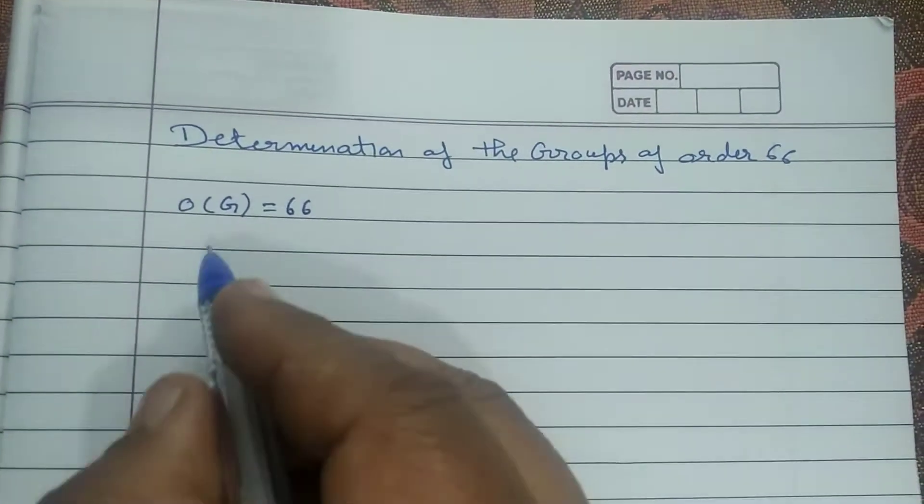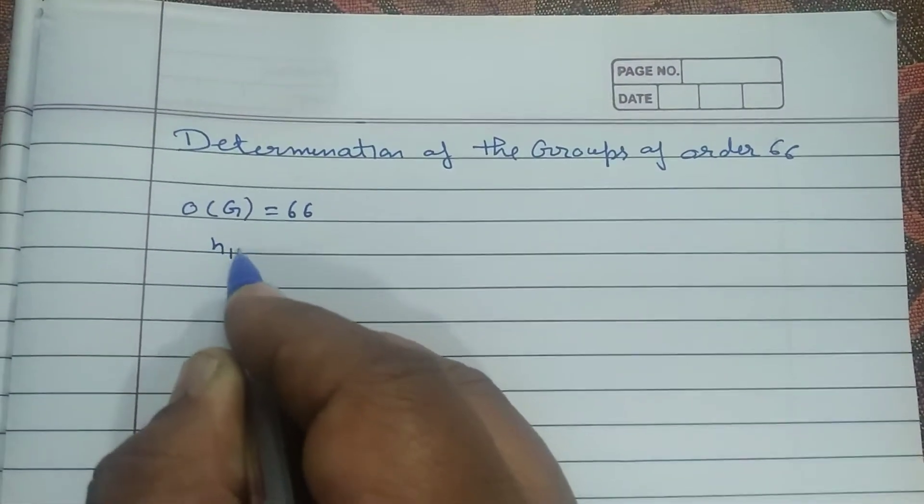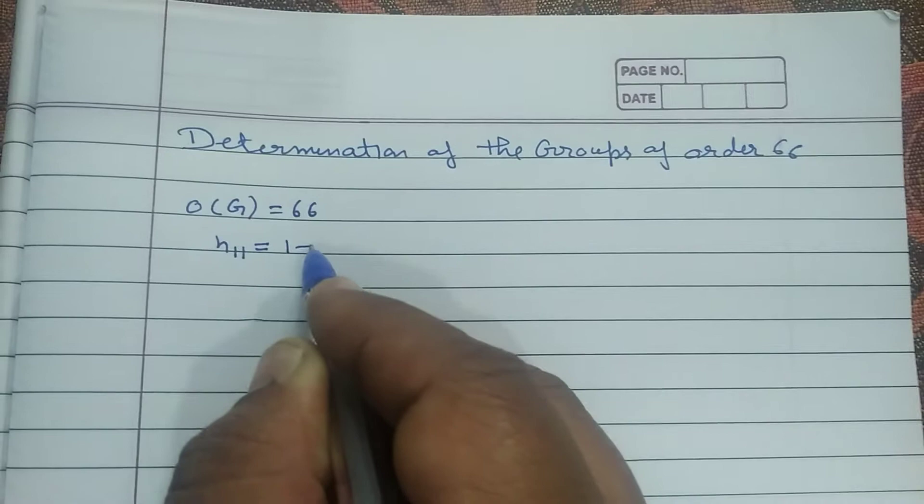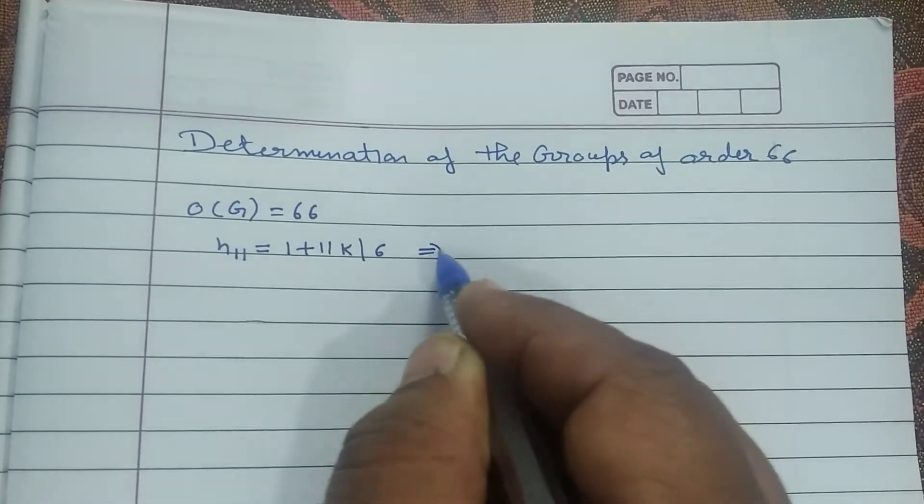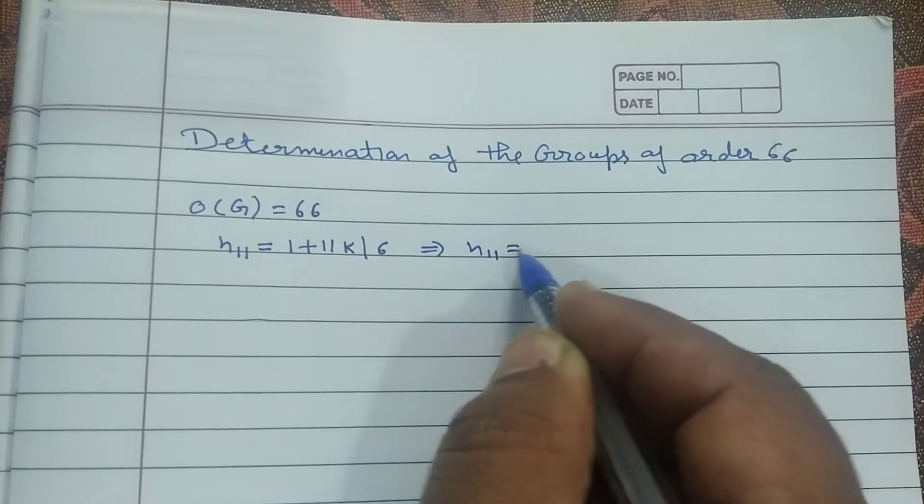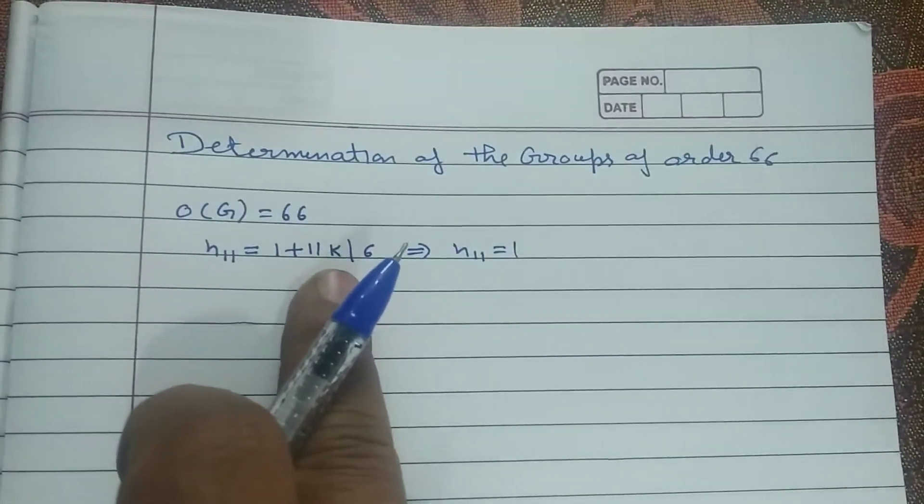Firstly we find n₁₁. What is n₁₁? 1 plus 11k divided by 6 implies that n₁₁ is 1 only. This is only possible when k is 0.